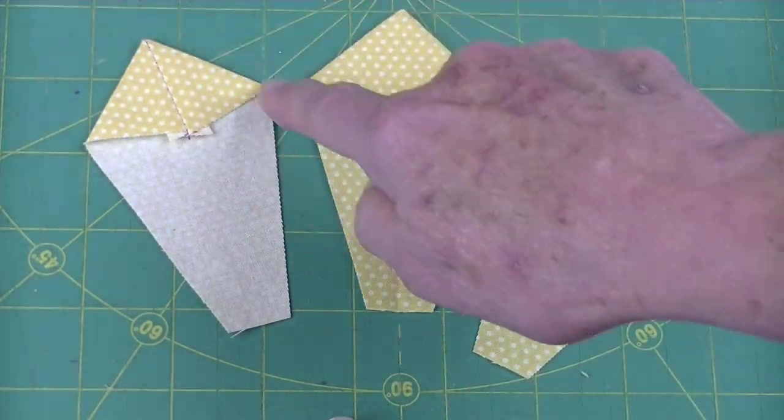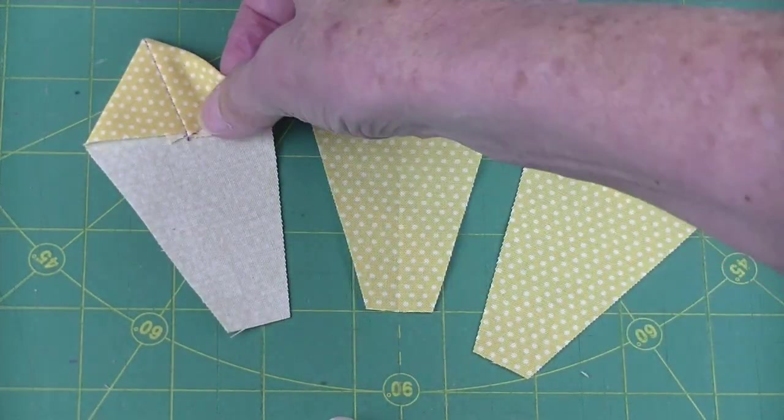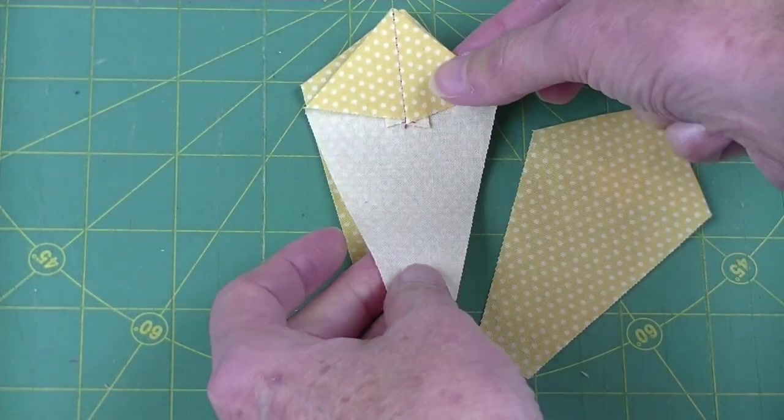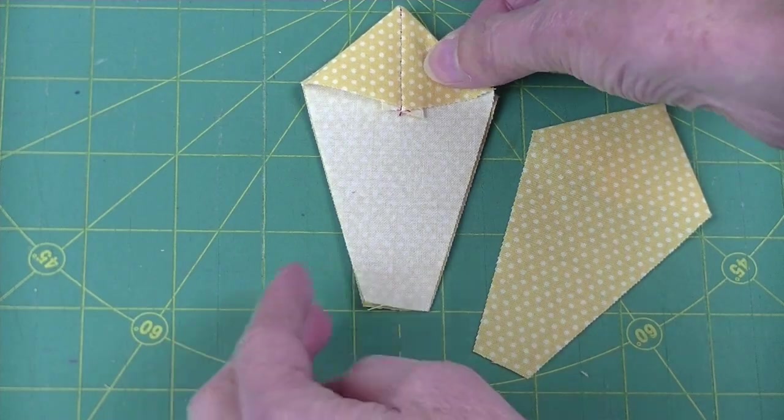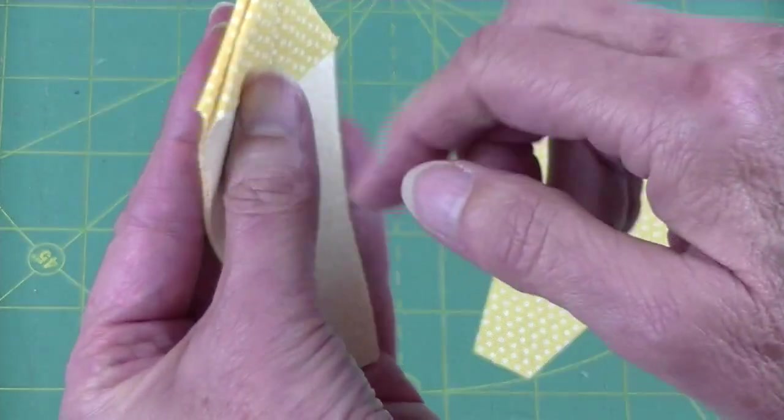After you press you want to make sure that both of these sides are equal. I like to hold it up to another one just to double check those sides.